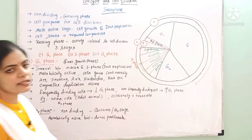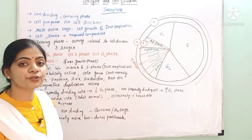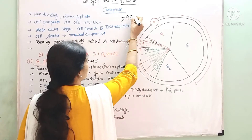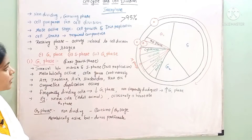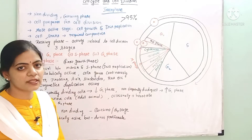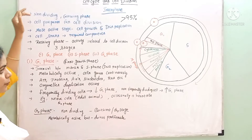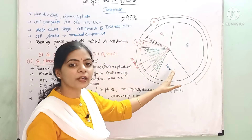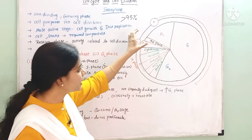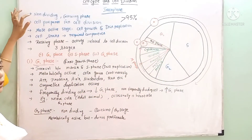Interphase occupies more than 95 percent of the total cell cycle duration. It is a long phase. Interphase is a non-dividing phase — cell division does not happen here; only mitosis or M phase is the divisional phase. The remaining time is interphase, and cells do not divide during interphase.